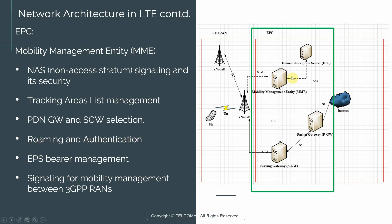Roaming and authentication: the MME works in tight coordination with the HSS for all subscriber authentication. When a UE attaches to the MME, the MME reaches out to the HSS, grabs security information, and authenticates the subscriber. When we look at the roaming architecture later in the course, we'll talk about how the MME plays a role in roaming.